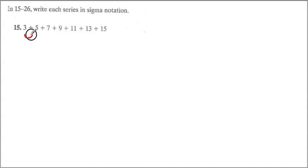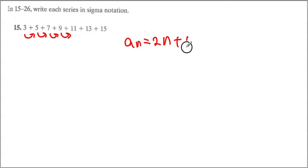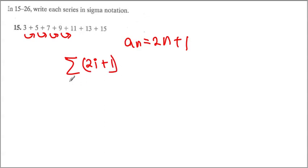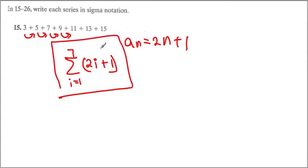Sigma notation: each point is increasing by 2. So we are looking at a_n = 2n. But the first number is 3, and plugging in 1 gives 2, so we need to add 1 more. We can check this works out. Using sigma notation with index i, the expression is Σ(2i + 1) where i goes from 1 to 7. This gives us our expression.